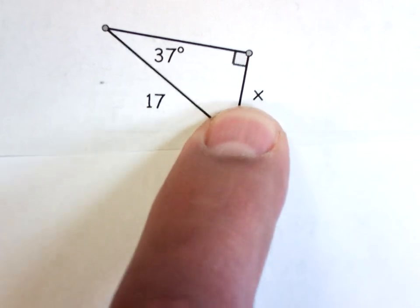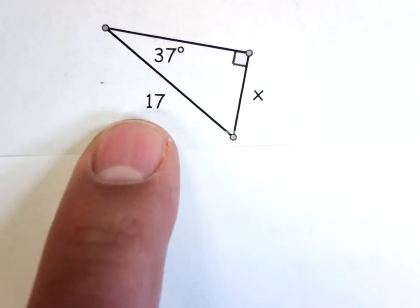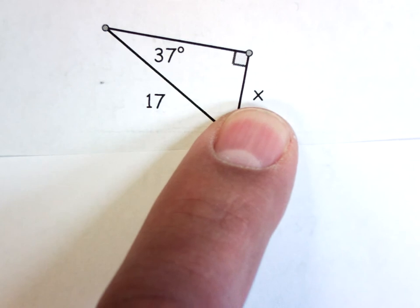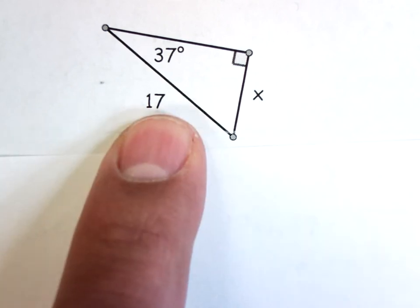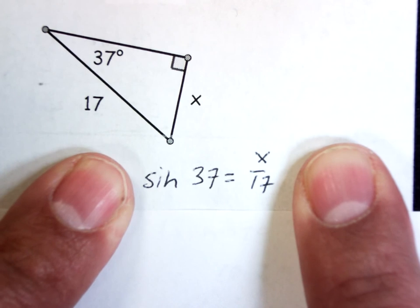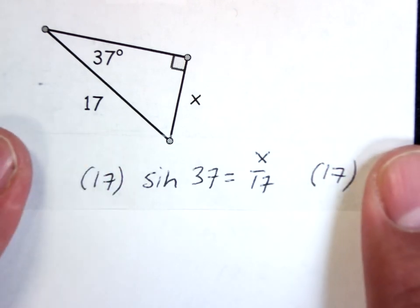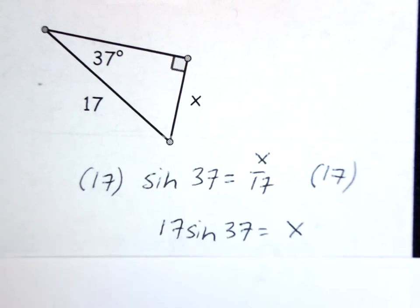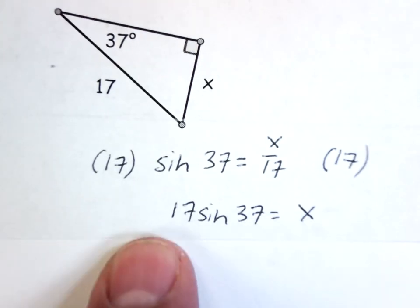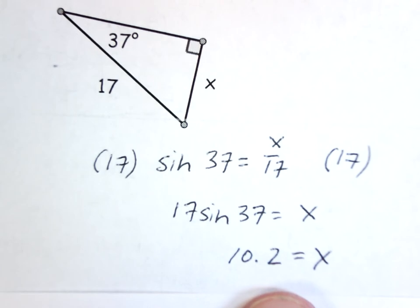This is the side I want, this is the side I know, and this is the angle I know. In relation to this angle, this is the opposite side and this is the hypotenuse. Sine uses opposite and hypotenuse. So: sin(37°) = x/17. Multiply both sides by 17 to clear the fraction, giving x = 17 × sin(37°). Put that in the calculator, and x = 10.2.